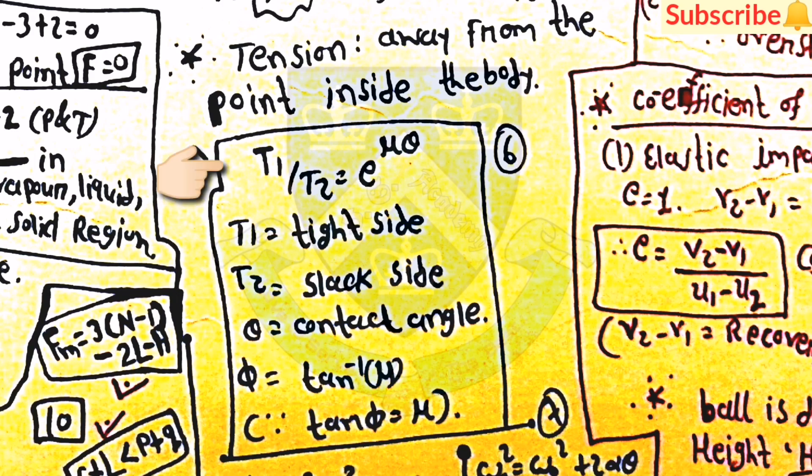Then after some equations which are useful: T1 by T2 is equal to e to the power mu theta. Here T1 is equal to tight side and T2 is equal to slack side. Then theta is equal to contact angle, and phi is equal to tan inverse mu.